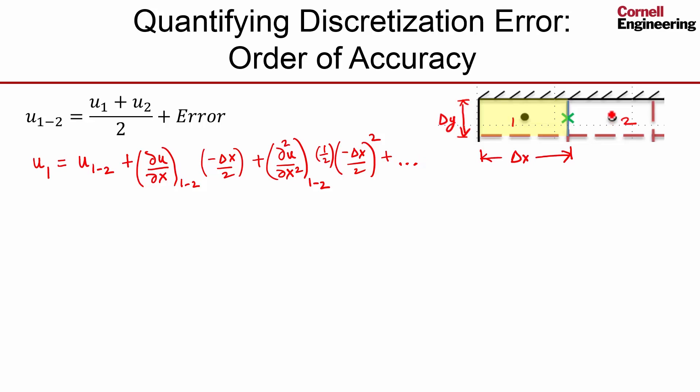Similarly, I can write an expansion of this value in terms of the value here. Let me write that out. Okay, so this expansion looks the same as that, except that instead of having minus delta x over 2, I have plus delta x over 2.